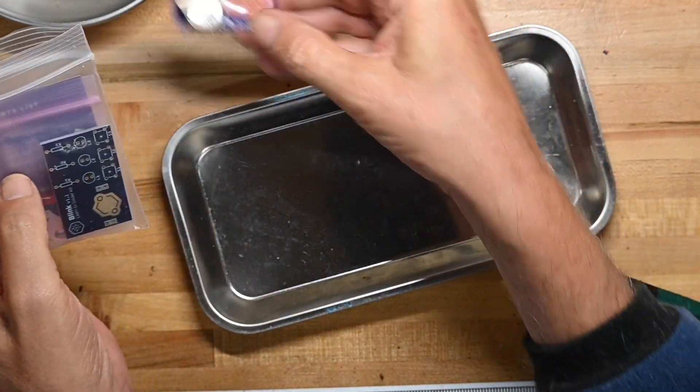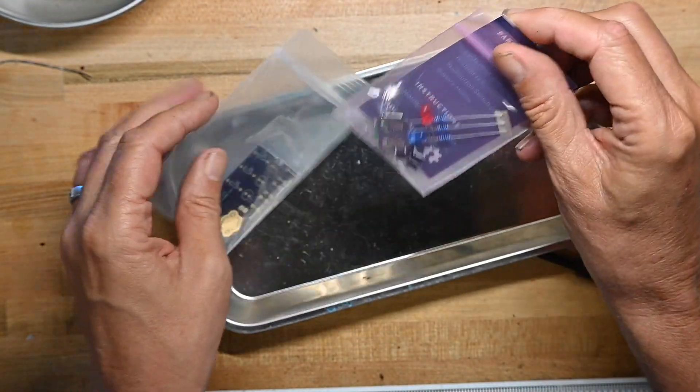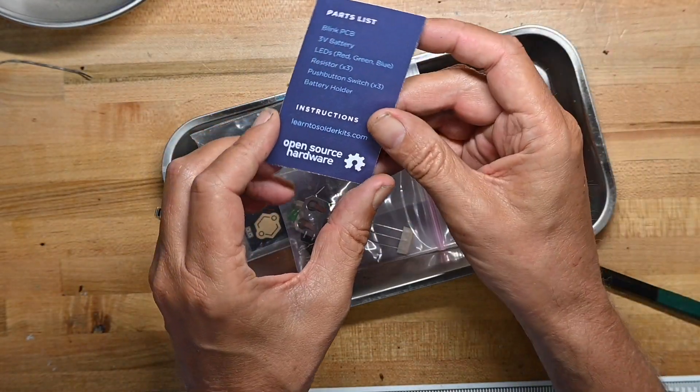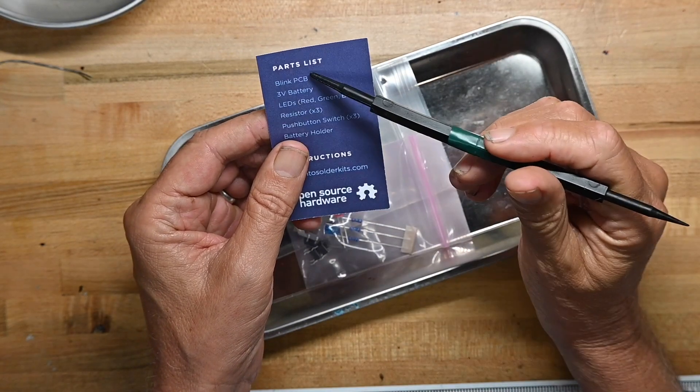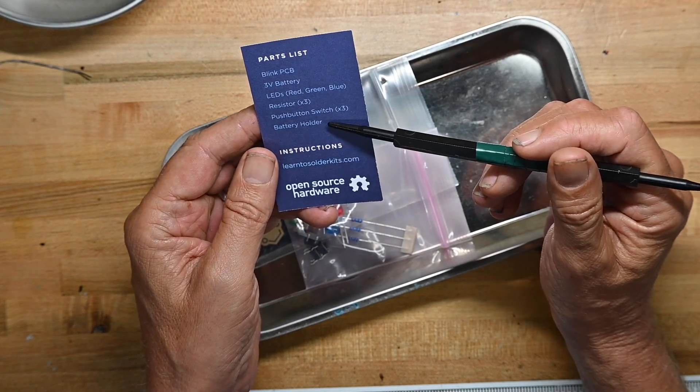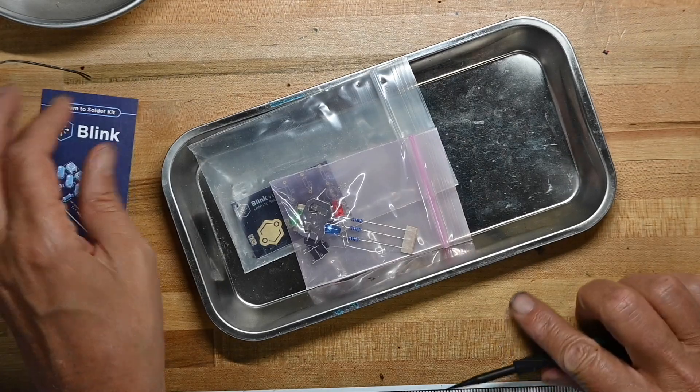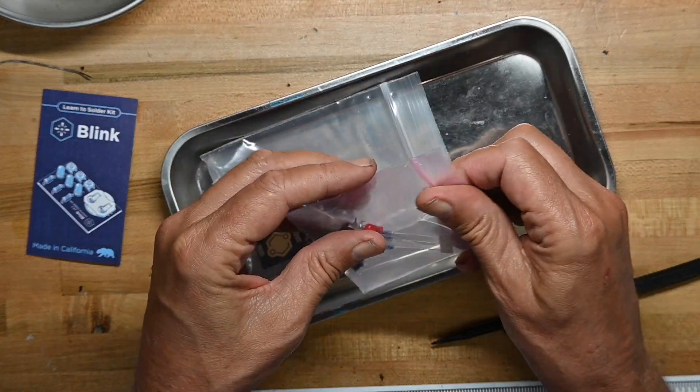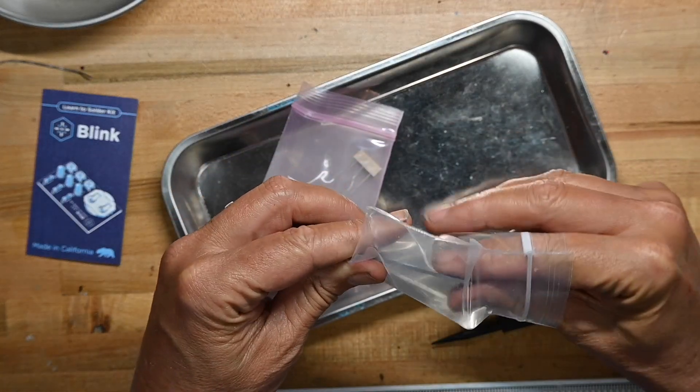2032 battery, standard 3-volt battery. We've got the instructions, parts list. The PCB, 3-volt battery, LEDs, three resistors, three switches, and a battery holder, and then instructions. So let's look at the circuit board first.